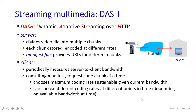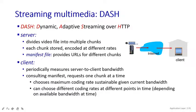On the client side, it periodically measures the bandwidth from server to client, then consults the manifest file and requests one chunk of data at a time. It chooses the maximum coding rate sustainable given the current bandwidth, using the manifest file to determine what rate to send to the client.